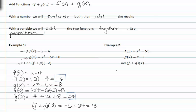f of x plus g of x will be the same as x squared minus five x plus x minus five. From here, we can just add the two together by adding like terms.